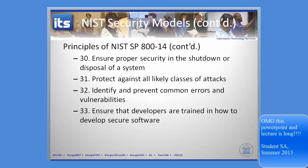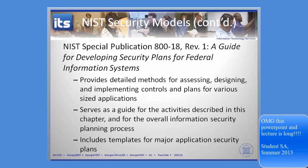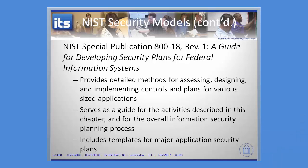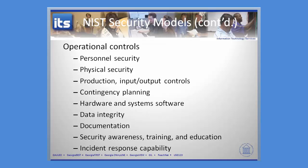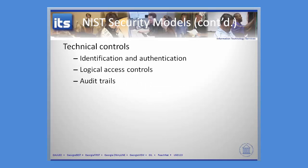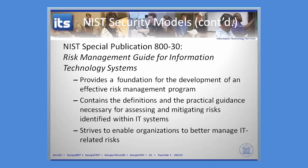SP800-18 looks at methods for accessing, designing, and implementing controls and plans for different applications. It includes managerial controls, operational controls, and technical controls — note that the operational controls are much larger in scope than the technical and managerial controls. Finally, NIST Special Publication 800-30 is a foundation for the development of a risk management program and talks about how to build a risk management program.